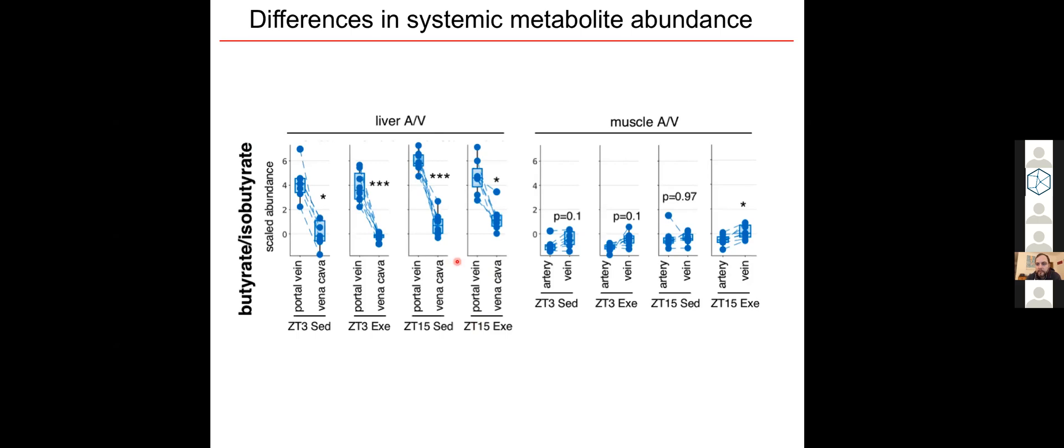Muscle, on the other hand, was a net exporter only after exercise at night. But you'll notice here, these are in the same scale, the relative concentrations in the muscle were much lower than those that we could detect going into and out of the liver. So again, highlighting these regional differences in metabolite abundance.